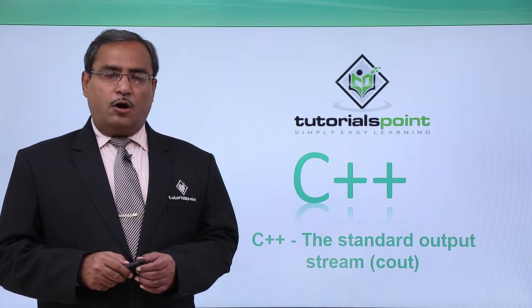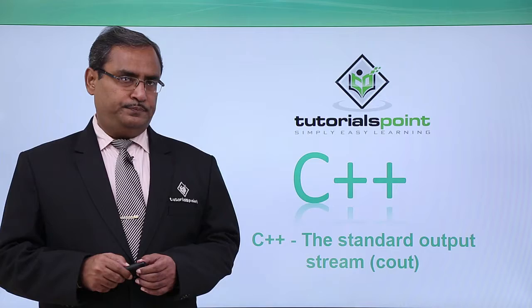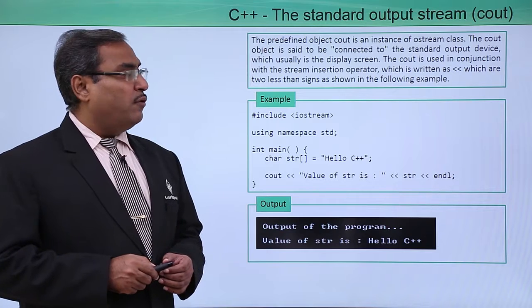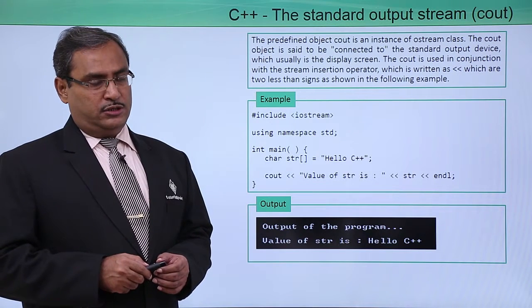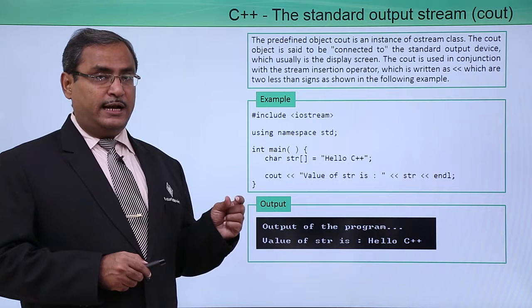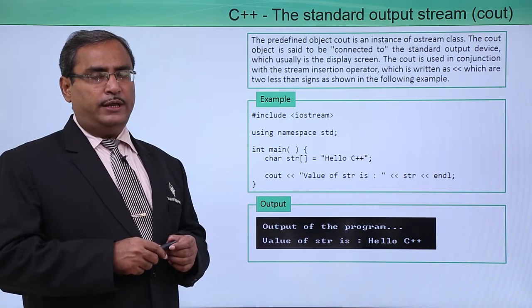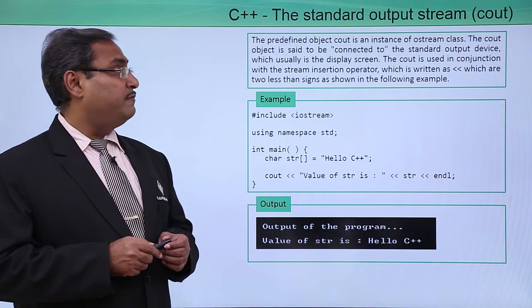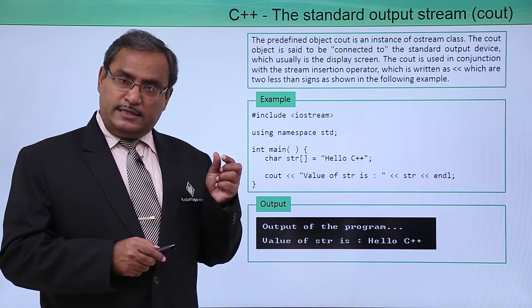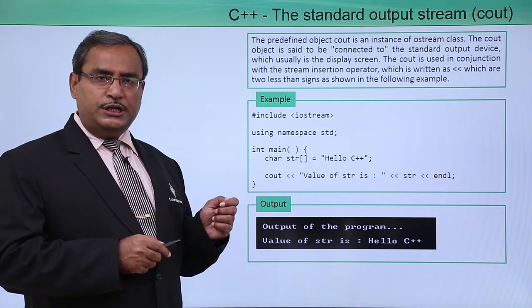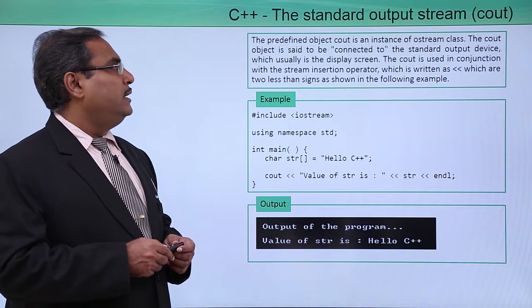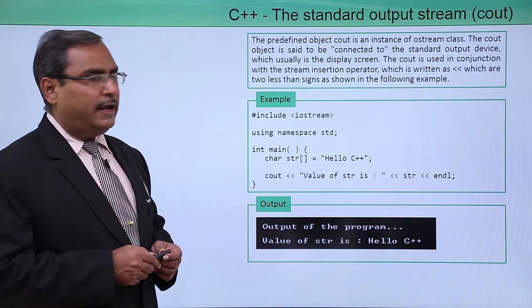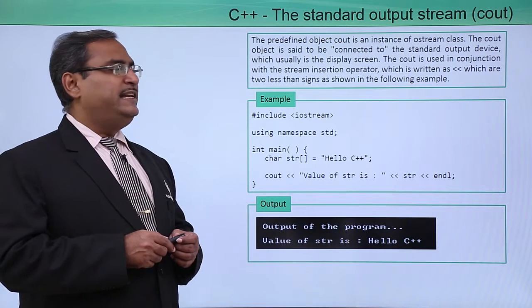C++ standard output stream: Cout. The predefined object Cout is an instance of the OStream class. In the previous video we discussed that to access Cout in C++ coding we need to include the IOStream header file. Cout is an object of the OStream class and is connected to the standard output device, which is usually the display screen.